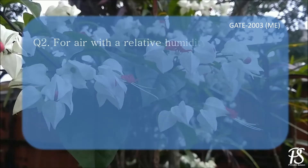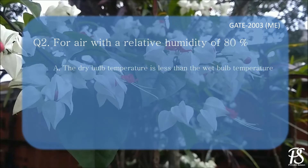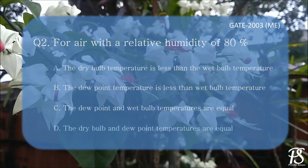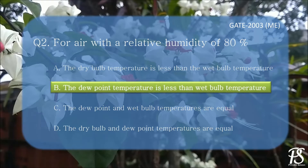For air with a relative humidity of 80%: A. The dry bulb temperature is less than the wet bulb temperature. B. The dew point temperature is less than the wet bulb temperature. C. The dew point and wet bulb temperatures are equal. Or D. The dry bulb and dew point temperatures are equal. The answer to this question is B — the dew point temperature is less than the wet bulb temperature.